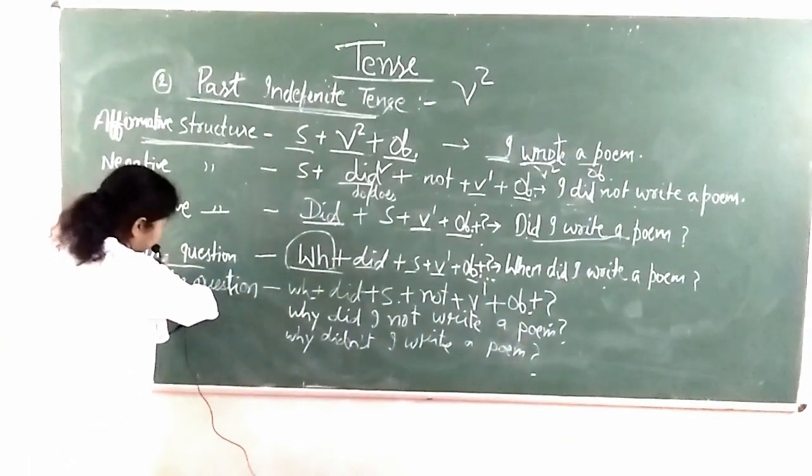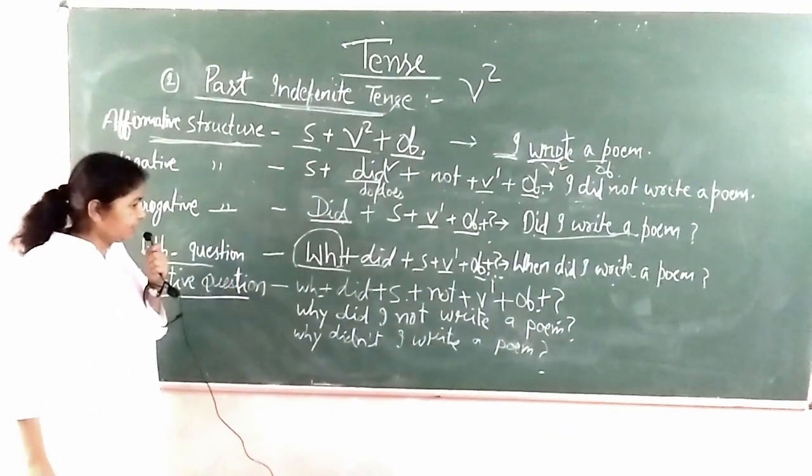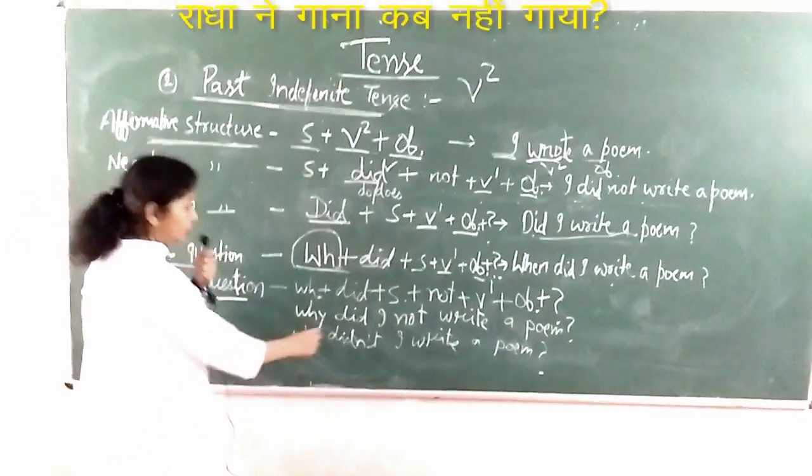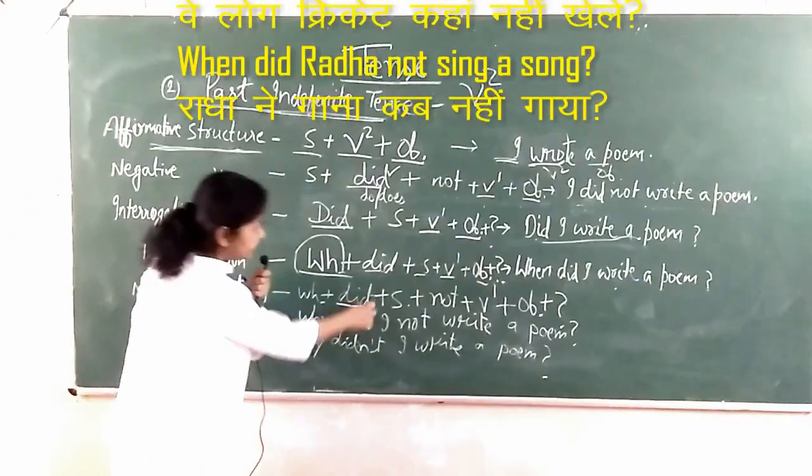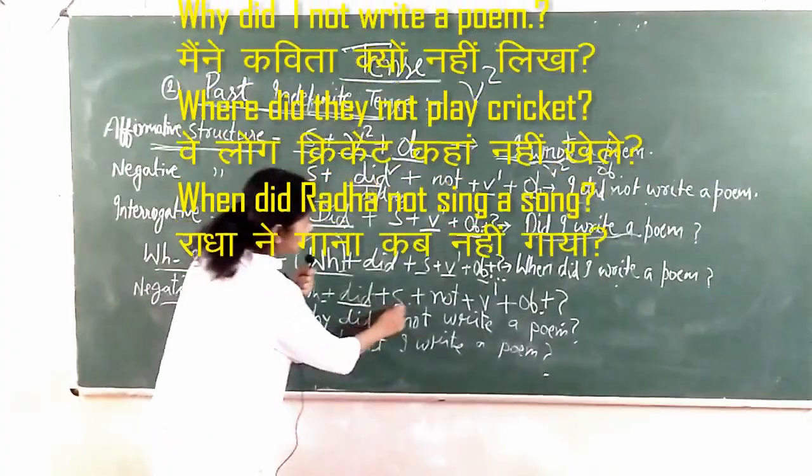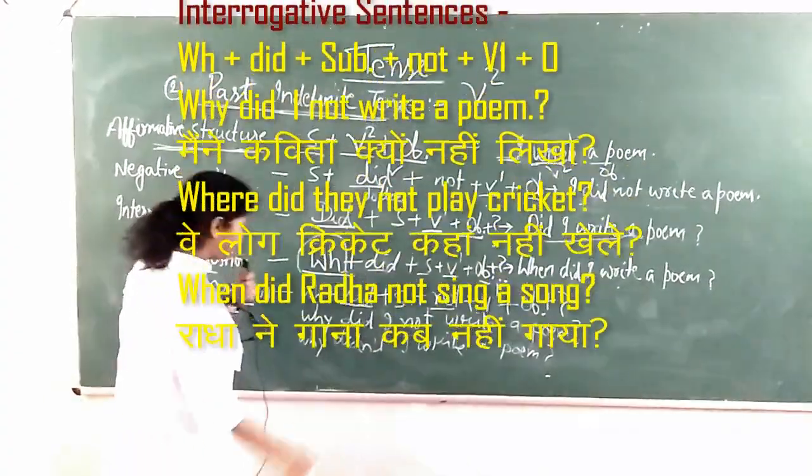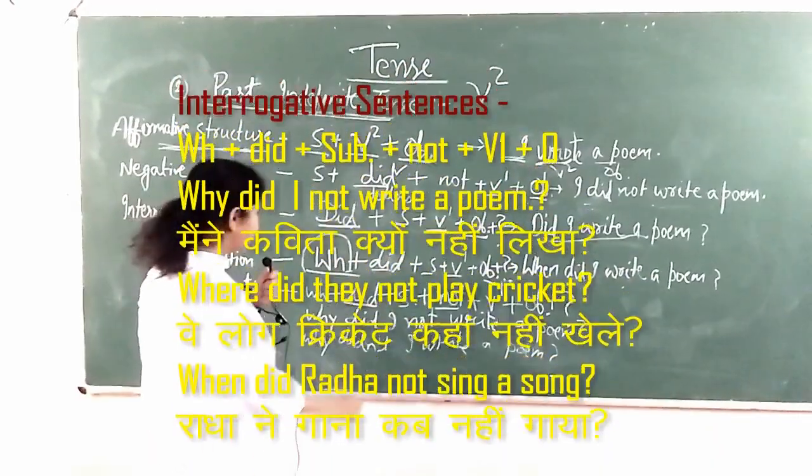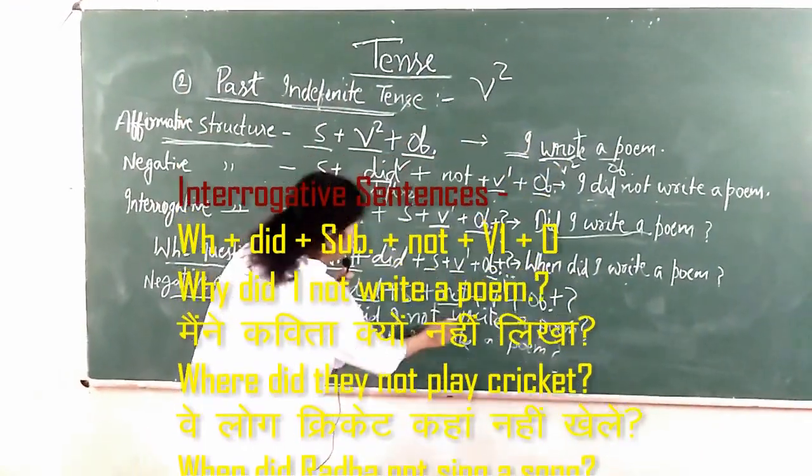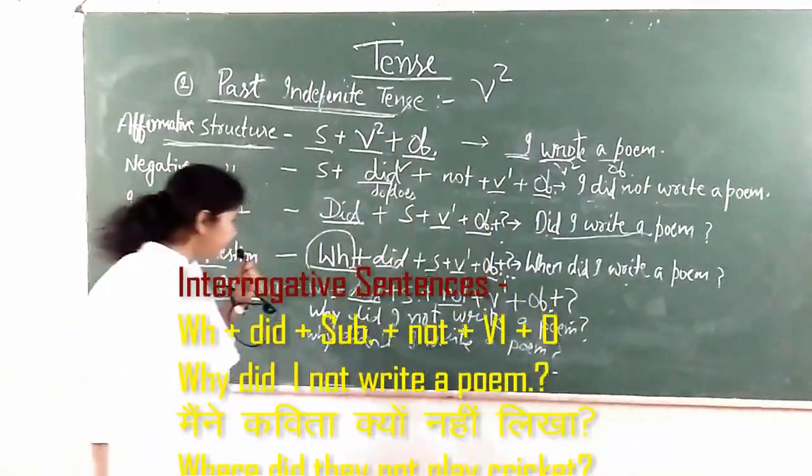Now look at the negative question. If the question is negative, then we use didn't, or after subject we use did not. For example, why did I not write the poem? I didn't write the poem.